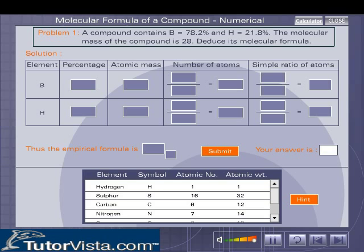By knowing the percentage composition of the various elements in a compound and their atomic masses, we can calculate the molecular formula of the compound. Here is a numerical problem to calculate the molecular formula of a compound.